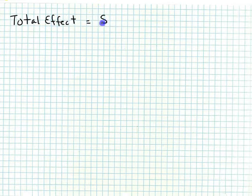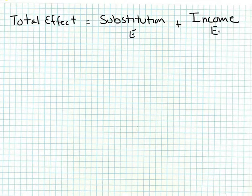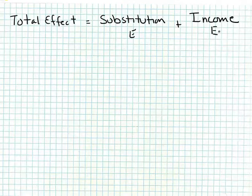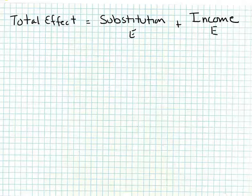Every price change has two effects. The total effect is equal to a substitution effect plus an income effect. The substitution effect of a price change is the effect of a change in a good's price on the demand for that good holding satisfaction constant — in other words, how much income would I have to give you when price went up to keep you just as happy as before. The income effect of a price change is the effect on the demand for X from the change in real income brought about by the change in the price of X.